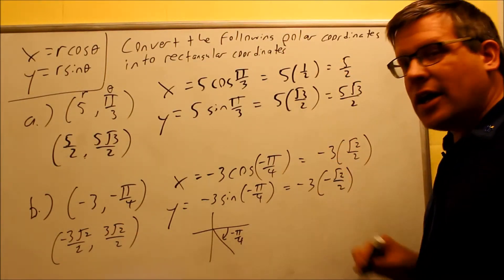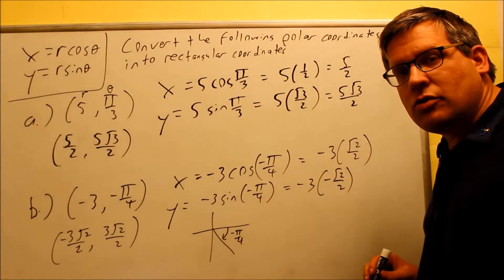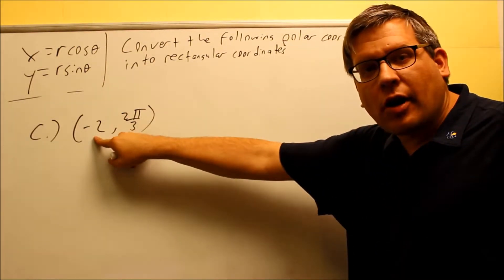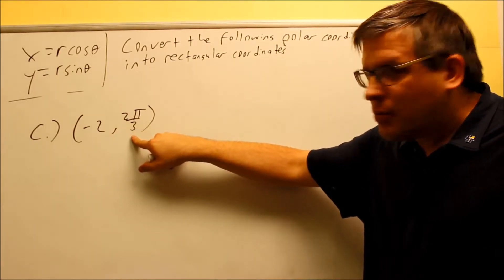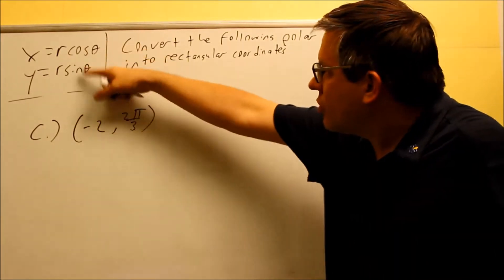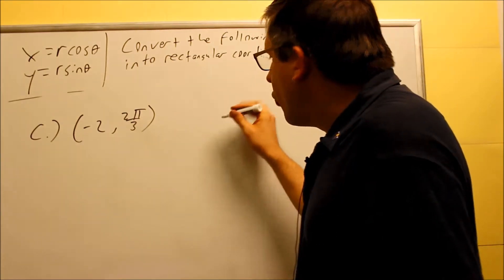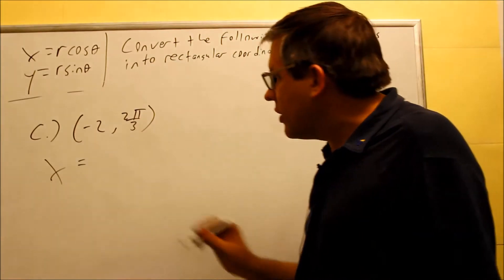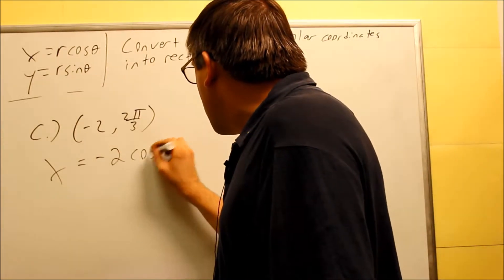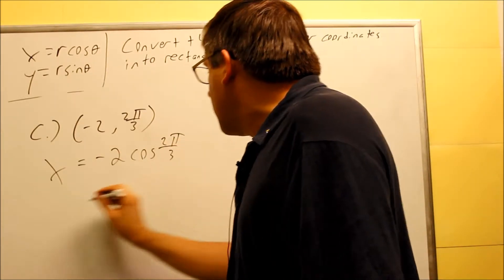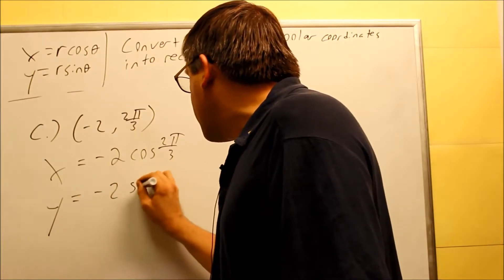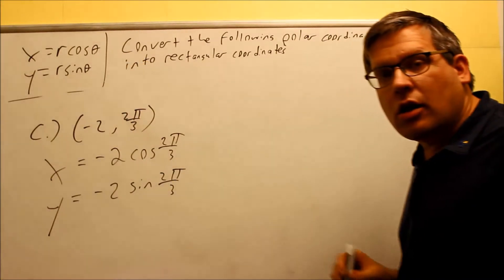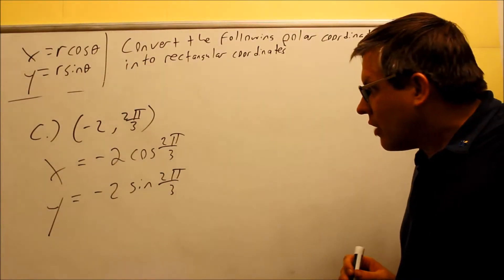So I've looked at parts A and B. Now let's do part C. For part C, r is negative 2 and theta is 2 pi over 3. We want to convert this to rectangular using the same formulas. So x equals negative 2 cosine of 2 pi over 3, and y equals negative 2 sine of 2 pi over 3. That's the setup using my r and my theta.